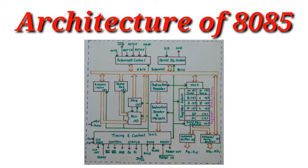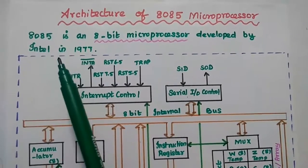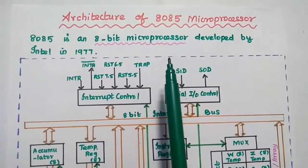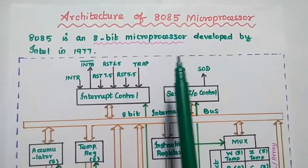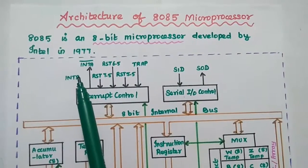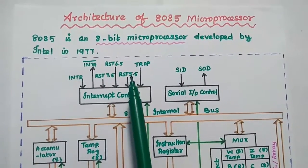Dear students, now we are going to discuss the architecture of the 8085 microprocessor in detail. The 8085 is an 8-bit microprocessor developed by Intel Corporation in 1977.